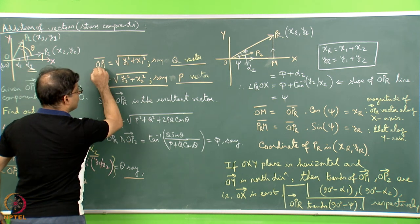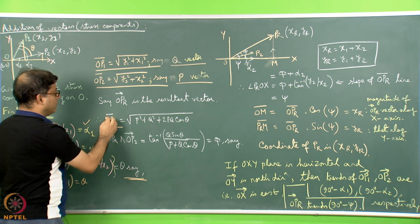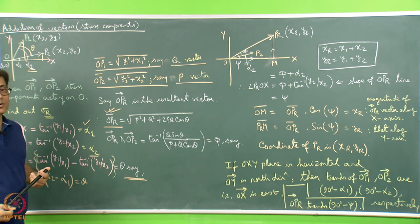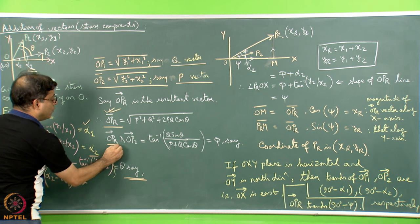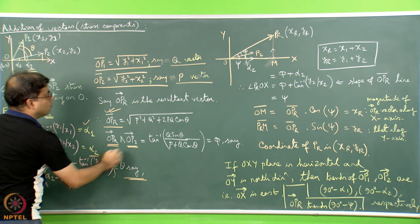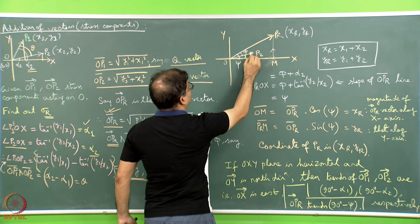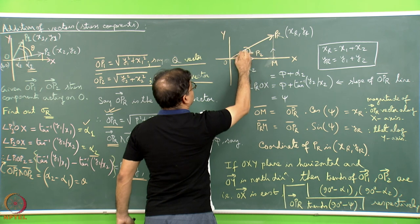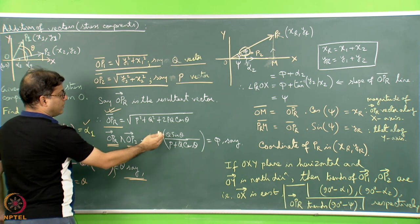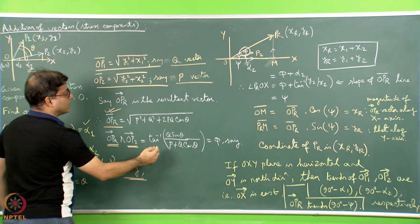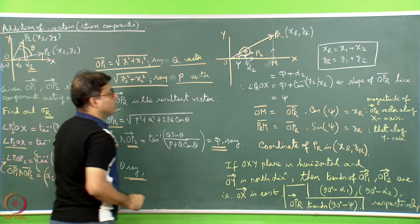p is known, q is known, and theta is known. If we put all these values in we will get the resultant magnitude of the stress. Additionally, the angle between OPr and OP2 — which is the angle phi — can be written as phi equals tan inverse of (q sin theta) divided by (p plus q cos theta), where p and q are as defined. In this way phi can also be calculated.